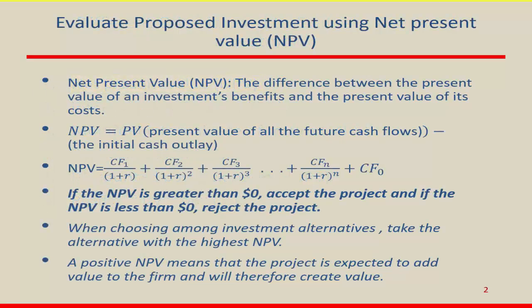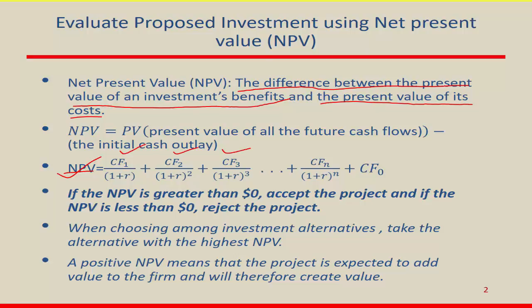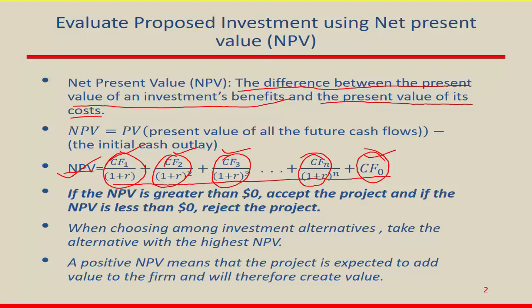I start from the basic concept: what is NPV, or net present value? It's a very common definition you can find everywhere. The NPV refers to the difference between the present value of an investment's benefit and the present value of its cost. Mathematically, when you make an investment you have future benefits and some cost. When you discount all future benefits, this gives us the present value of all future benefits, and subtracting the initial investment gives us the net present value of all the cash flows from that investment.